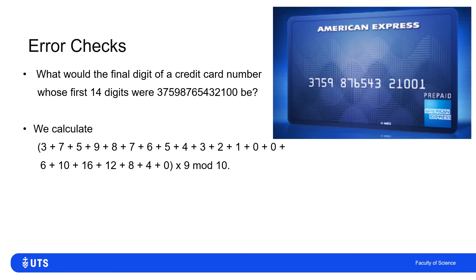The Luhn algorithm says: add up all those digits — 3 plus 7 plus 5 plus 9 and so on. Then, once I've added those 14 digits, add twice the first digit, so 6 instead of 3. Then add twice the third digit, so 10 because of 5. Then add 16 because double the 8, which is the fifth digit. Once I've got that, multiply by 9 and work out the remainder when divided by 10.